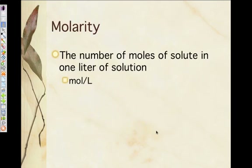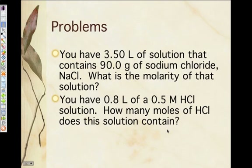Since we just talked about concentrations, we have a new unit: molarity. The big M means molarity — it's a concentration unit. It's the number of moles of solute in one liter of solution. Molarity is equal to moles per liter. So when we saw 1×10⁻⁷ molar, that means there's 1×10⁻⁷ moles in one liter of solution. We will be doing some practice problems.